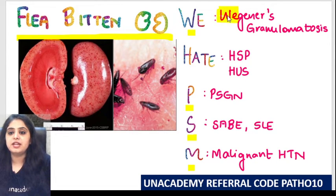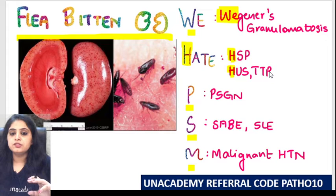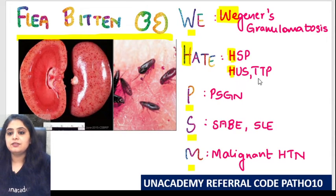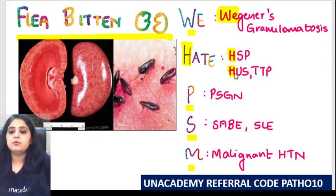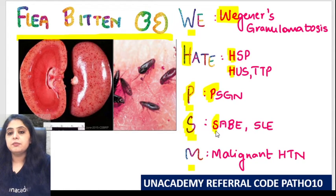V stands for Wegener's granulomatosis. H stands for HSP — Henoch-Schönlein purpura — and HUS/TTP. HUS (hemolytic uremic syndrome) and TTP (thrombotic thrombocytopenic purpura) belong to the same spectrum of disorders. So H covers HSP, HUS, and TTP.